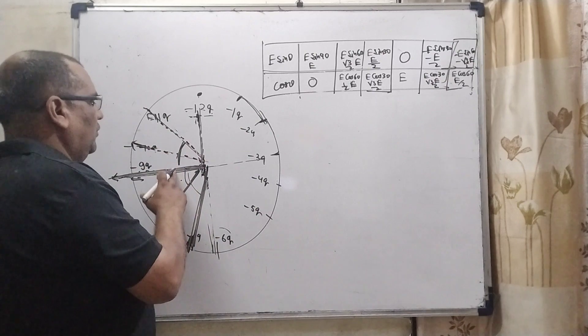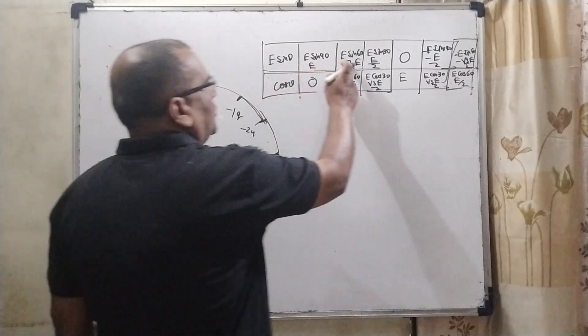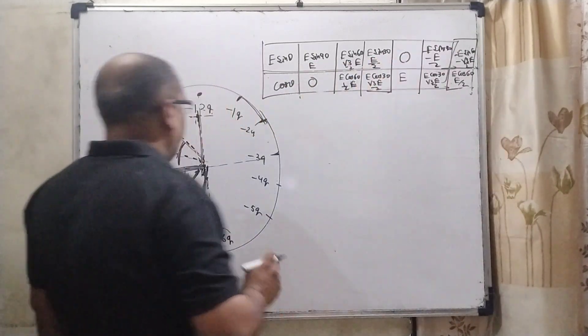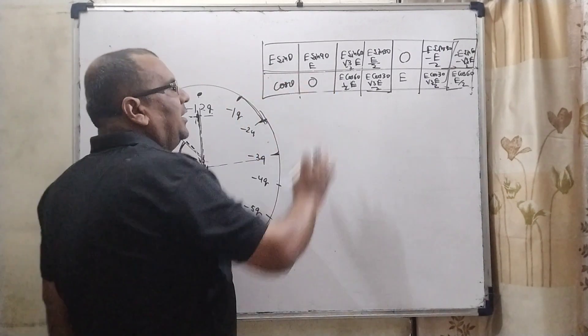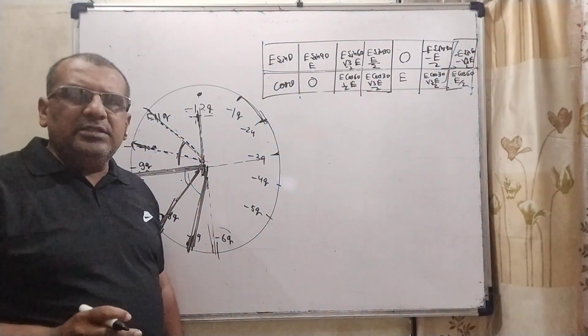So here 1, 2, 3, 4, 5, 6. 1, 2, 3, 4, 5, 6. So all these components divided E cosine theta and E sine theta.